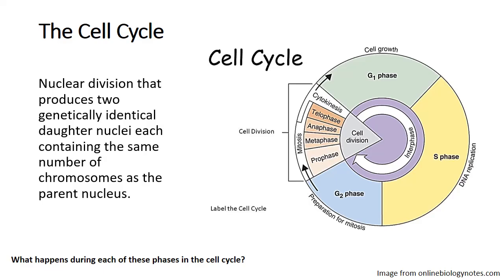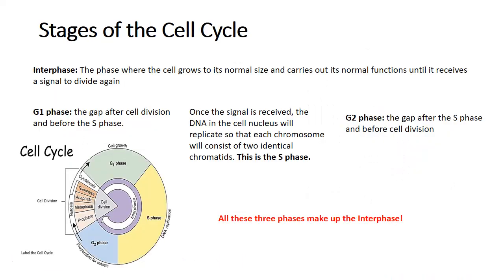The interphase is usually referred to as the resting stage of the cell cycle. During interphase, the cell grows to its normal size and carries out its normal functions until it receives a signal to divide. The G1 phase is where growth happens after cell division; the S phase is where DNA in the nucleus replicates to make identical chromosomes and chromatids; and the G2 phase is where the cell prepares to divide through mitosis. G1, S, and G2 together make up interphase.